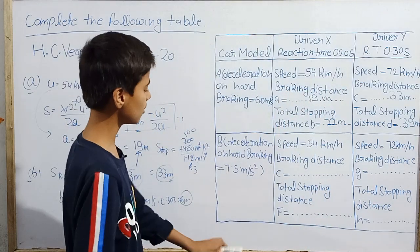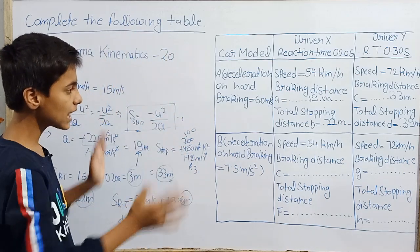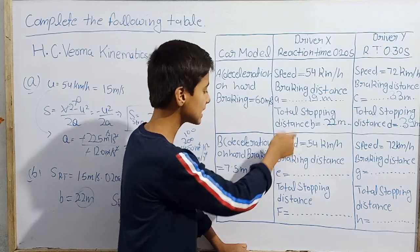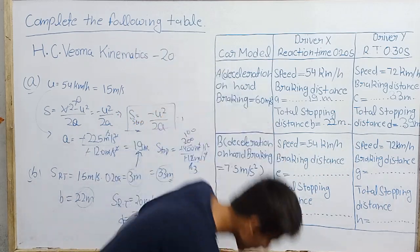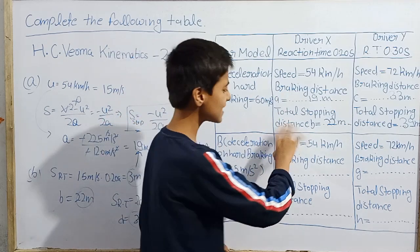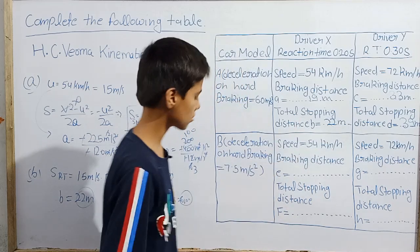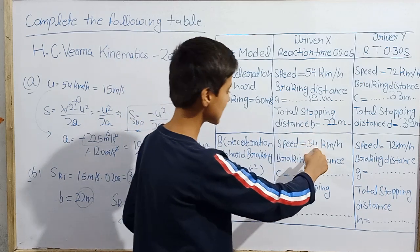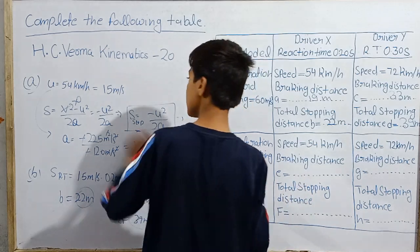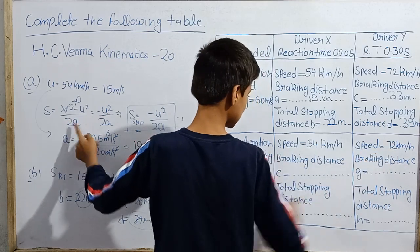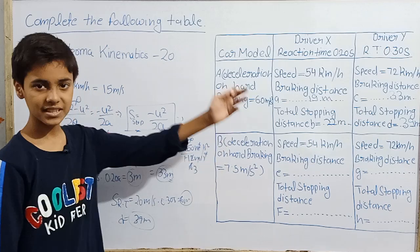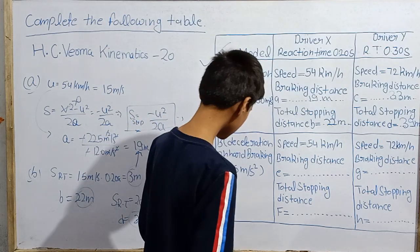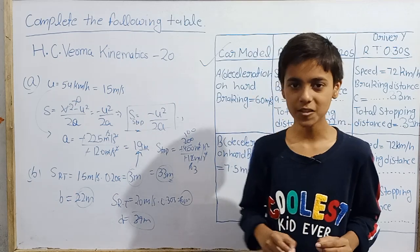So this is how we solve all these problems. The formula remains the same — S = −u²/2a for braking distance, plus reaction time distance for total stopping distance. We have solved 4 of the 8 cases. For the remaining cases E, F, G, and H, just change the deceleration to 7.5 m/s² and use the same formulas. Hope you liked today's video. Thanks for watching. Jai Hind, Jai Bharat.